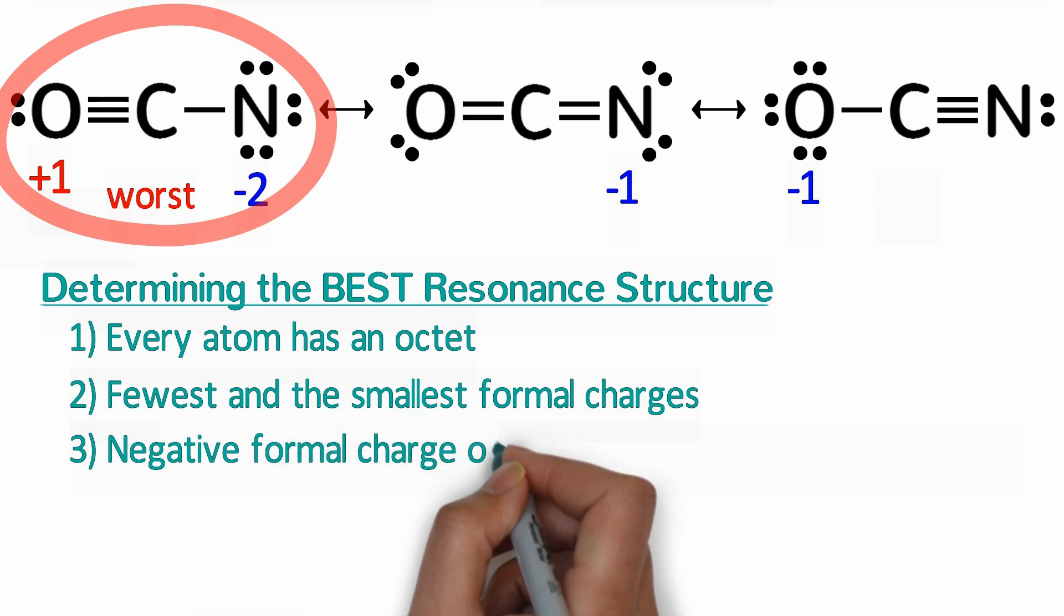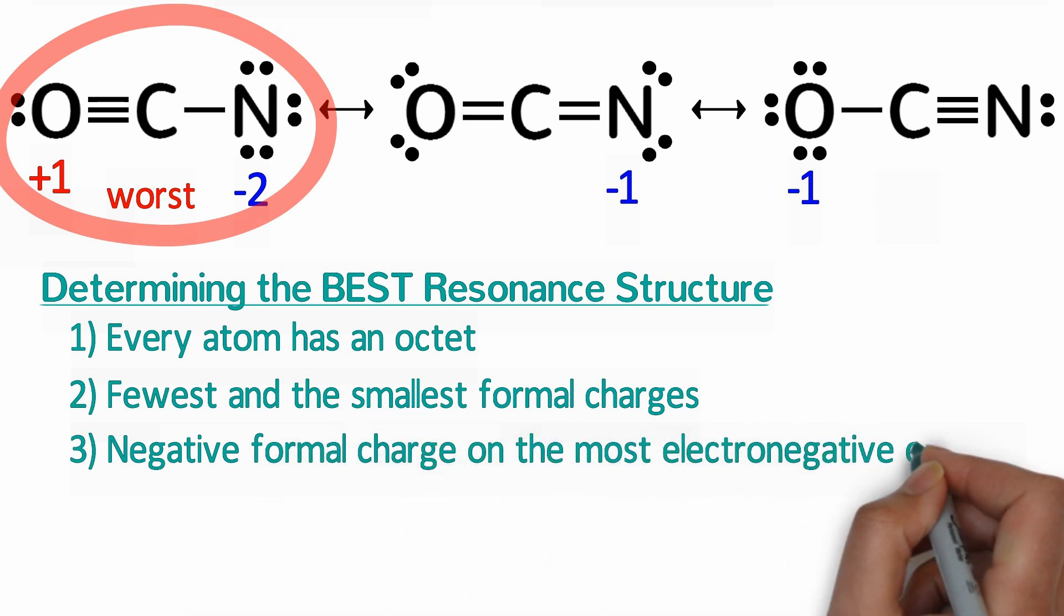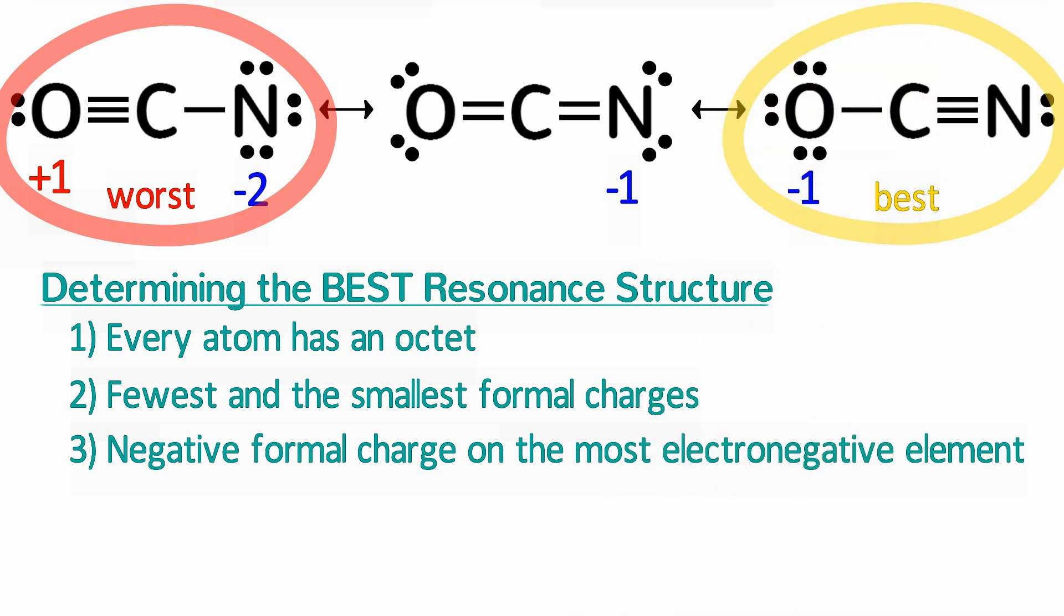The third rule is that negative formal charges should be on the most electronegative element and positive formal charges should be on the least electronegative element. Try to apply this rule to determine the best resonance structure. Yes, this is the best resonance structure because oxygen is more electronegative than nitrogen, so the negative charge is on the most electronegative element.